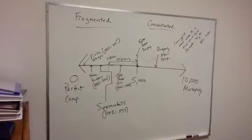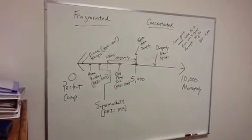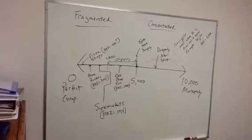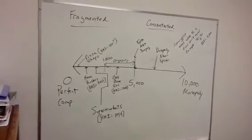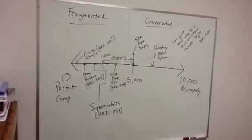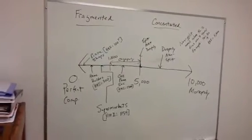So, here I have a number line, 0 to 10,000, 0 representing perfect competition, 10,000 representing monopoly. And of course, perfect competition doesn't really happen in the real world. Monopolies do happen, but not all that often.